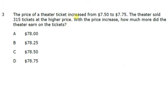And it wants to know how much money he's going to save, so we're going to subtract. We have zero, zero, bring down the decimal point, five minus zero is zero, four minus three is one. And so he's going to save, see, $15. All right, next question. The price of a theater ticket increased from $7.50 to $7.75. The theater sold 315 tickets at the higher price.